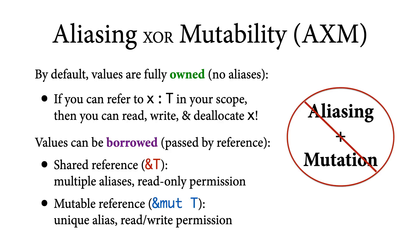However, if you want to create aliases to a value — for example, to pass it by reference — then that's called borrowing, and you have two ways of doing it. You can either create a shared reference or a mutable reference, depending on whether you want to allow multiple aliasing or mutation. If you want multiple aliasing, you create a shared reference of type ampersand T, which you can copy freely but cannot use to mutate the value. If you want mutation, you create a mutable reference of type ampersand mute T, which you cannot freely copy — it's a unique alias — but you can use it to mutate the value.